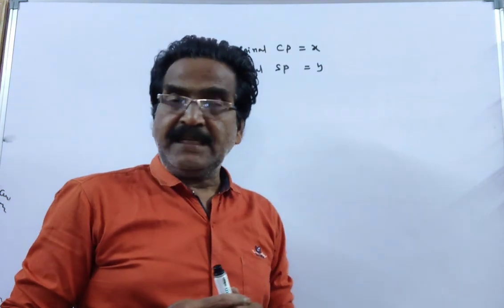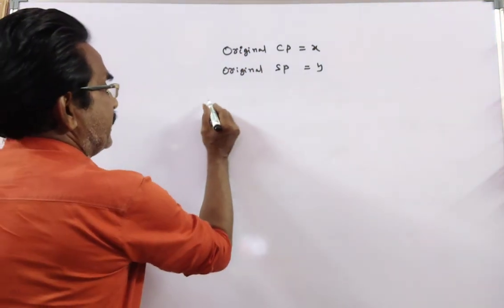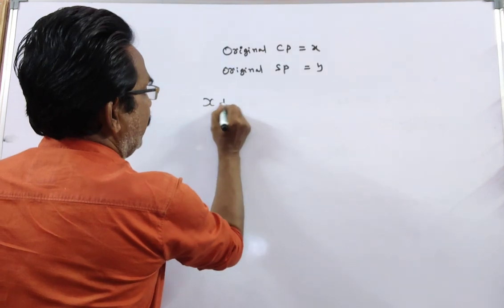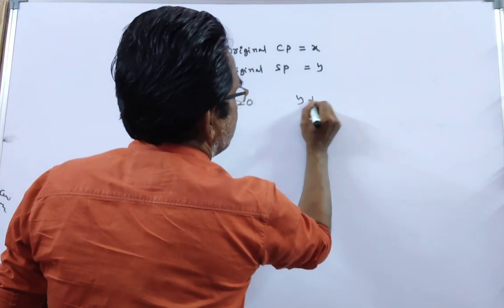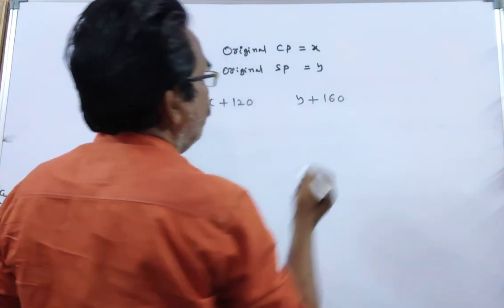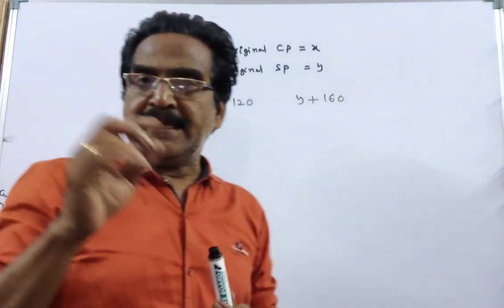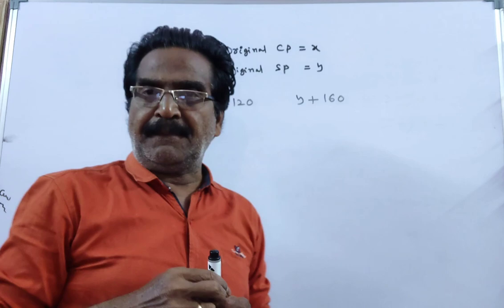It is given that if the cost price is increased by Rs. 120 and the sold price is increased by Rs. 160, there will be a gain of 33 1 by 3 percent.